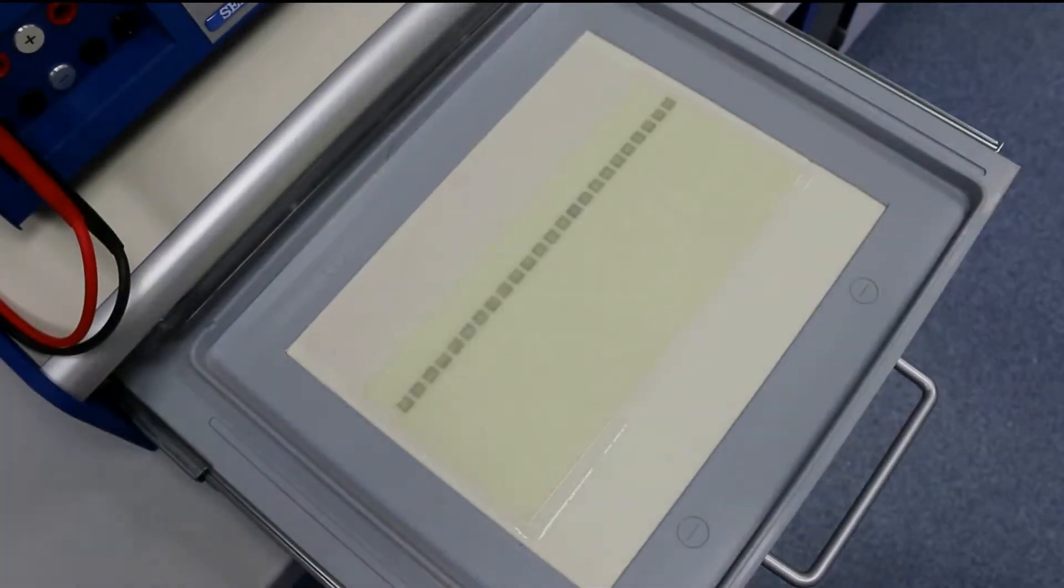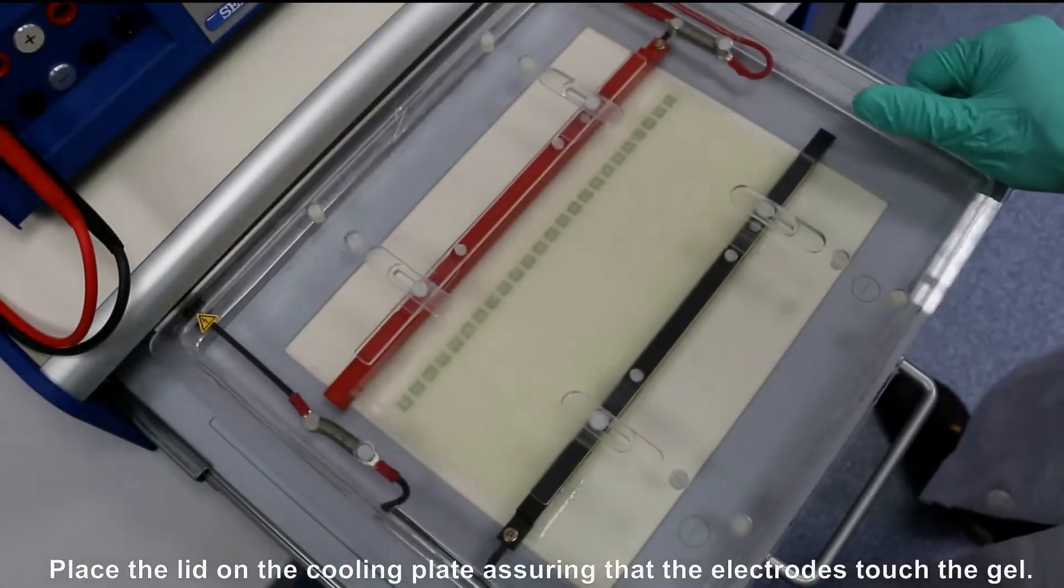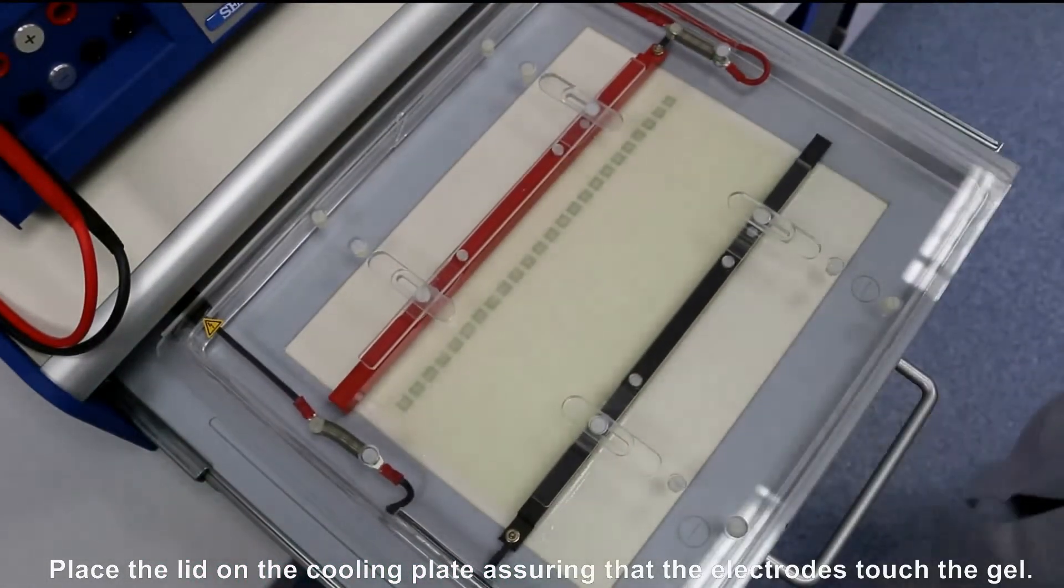Place the lid on the cooling plate. Assure that the electrodes touch the gel surface.